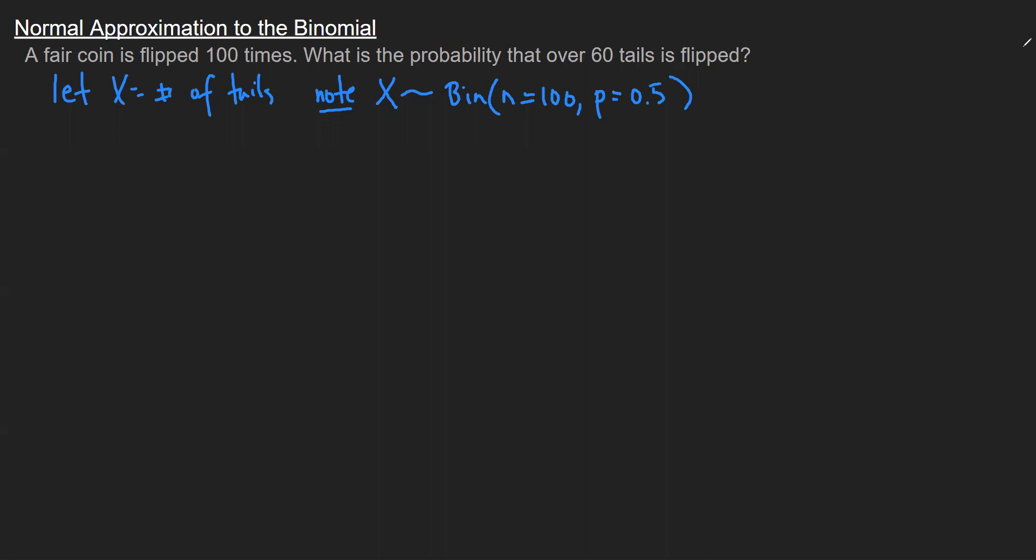Now, the identity of the distribution helps me calculate the specific probability. In a lot of these examples, you have a structure or formula that you can evaluate depending on the random variable. So what we want is, what's the chance that over 60 tails? So that's my probability that X is over 60.